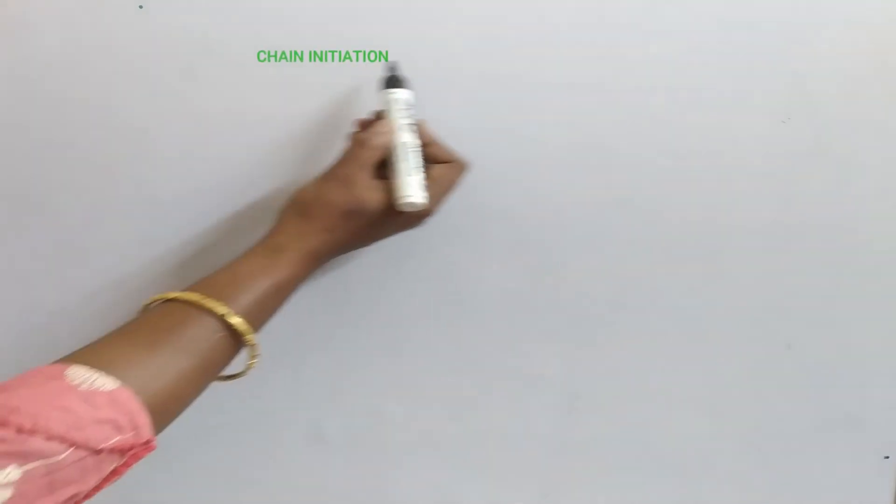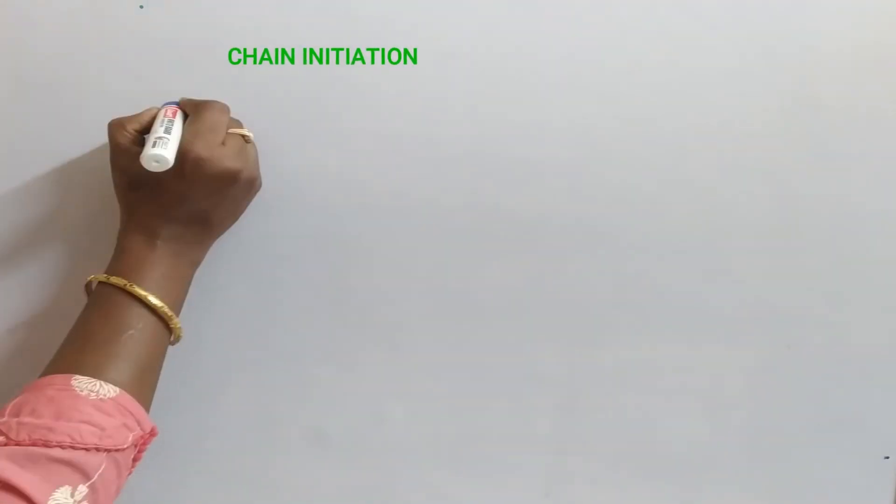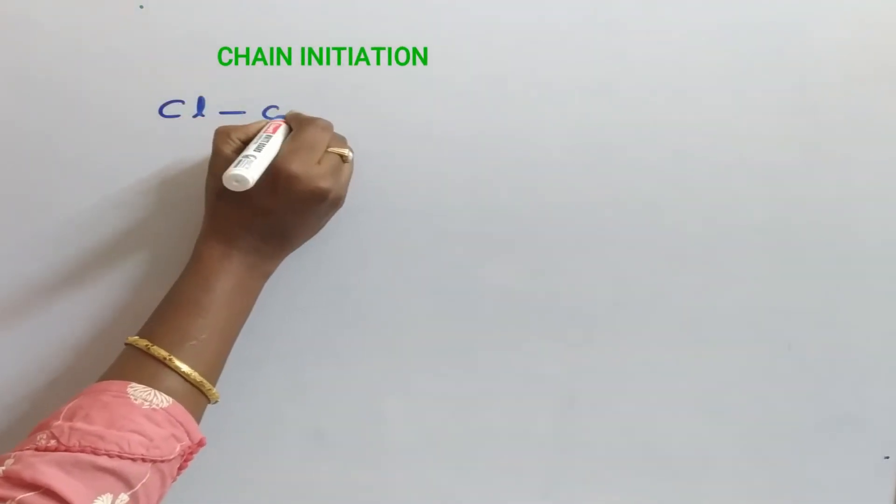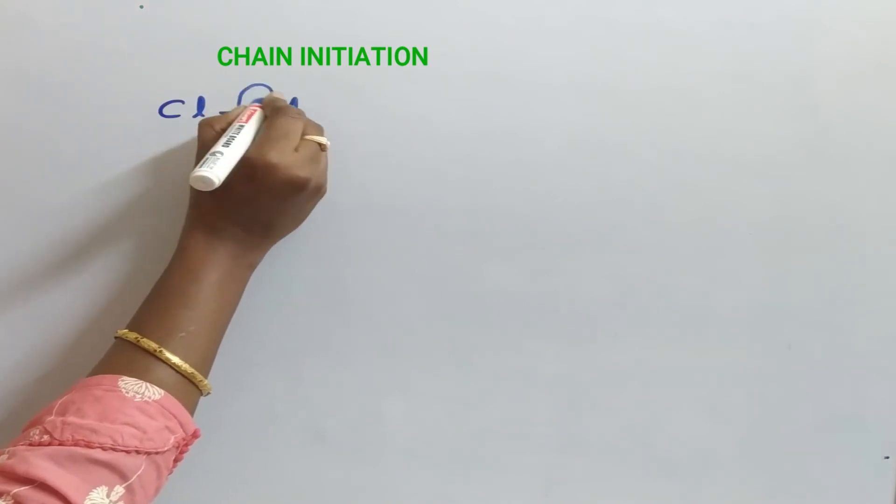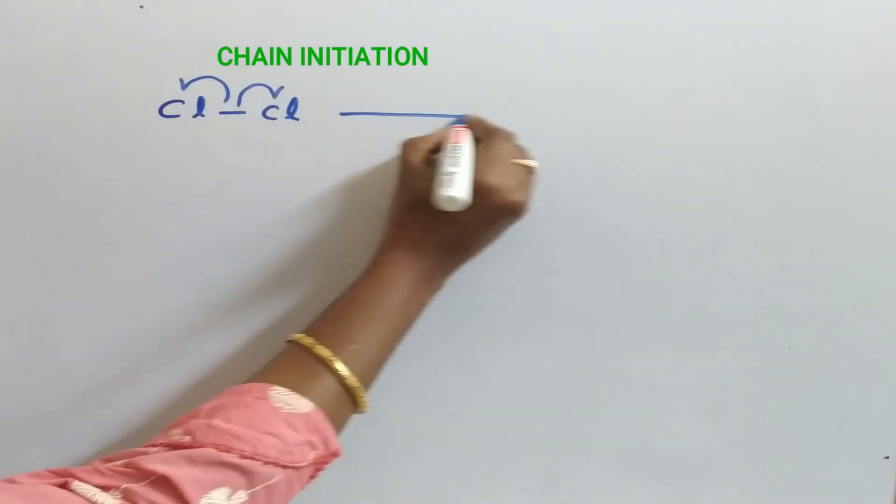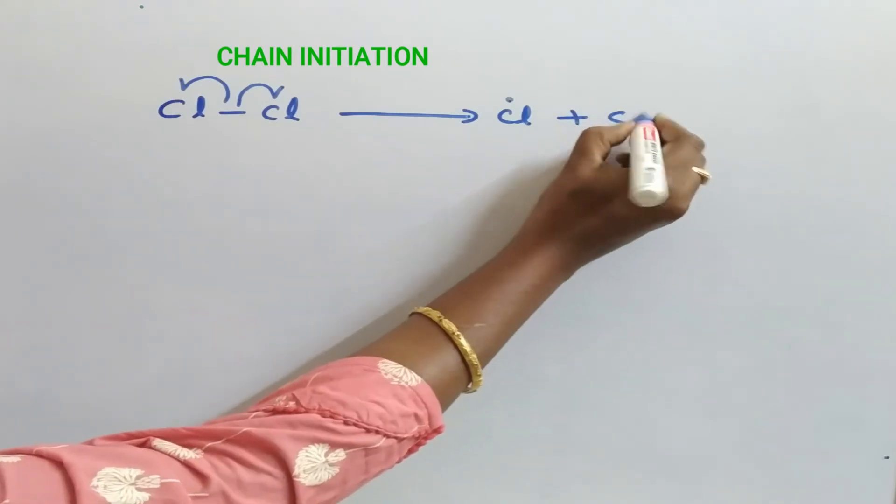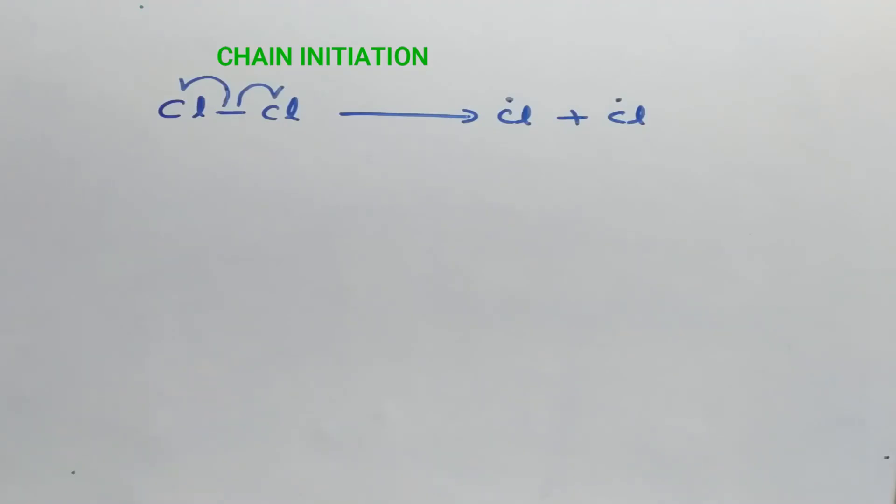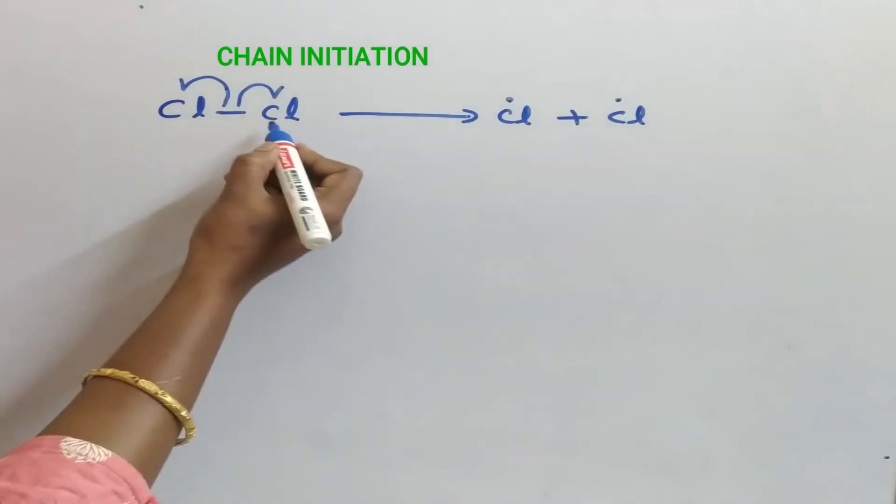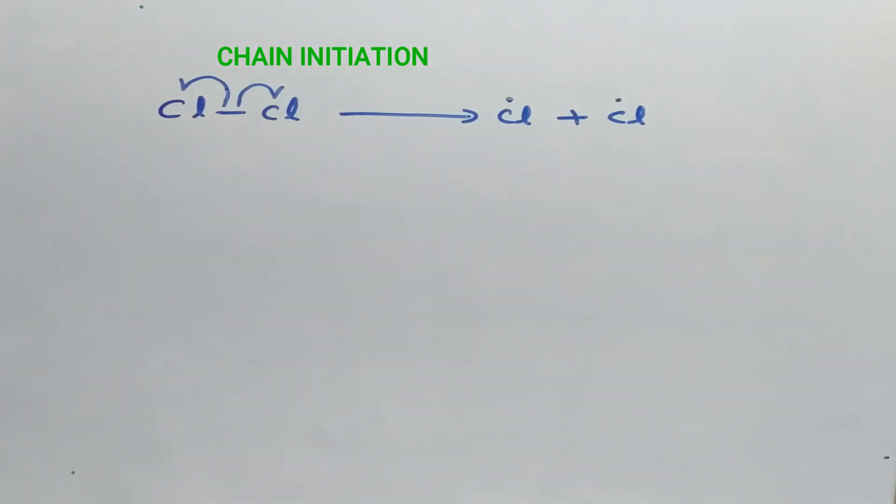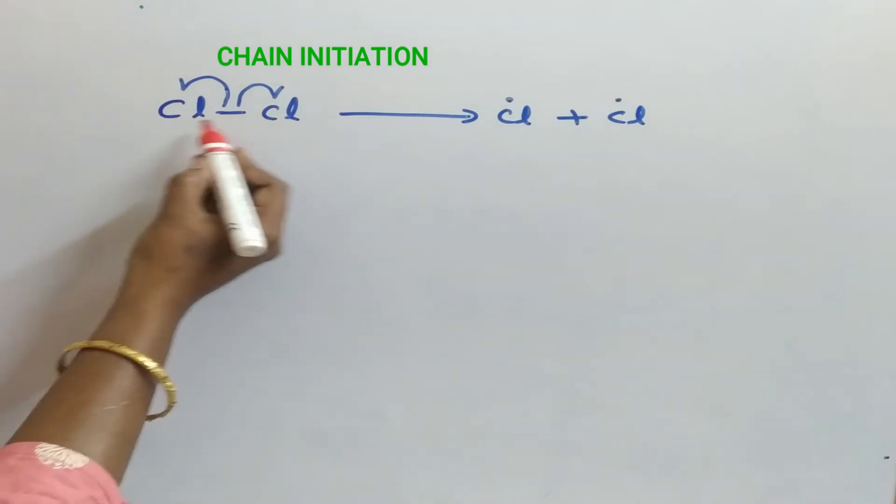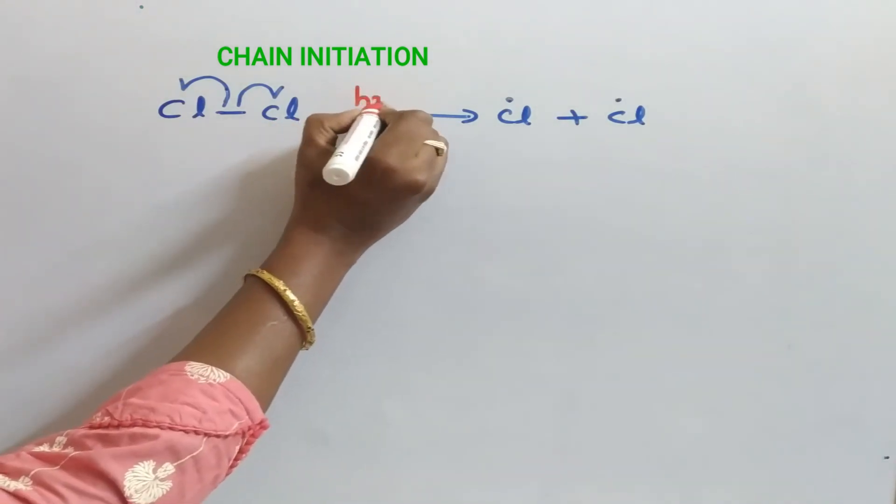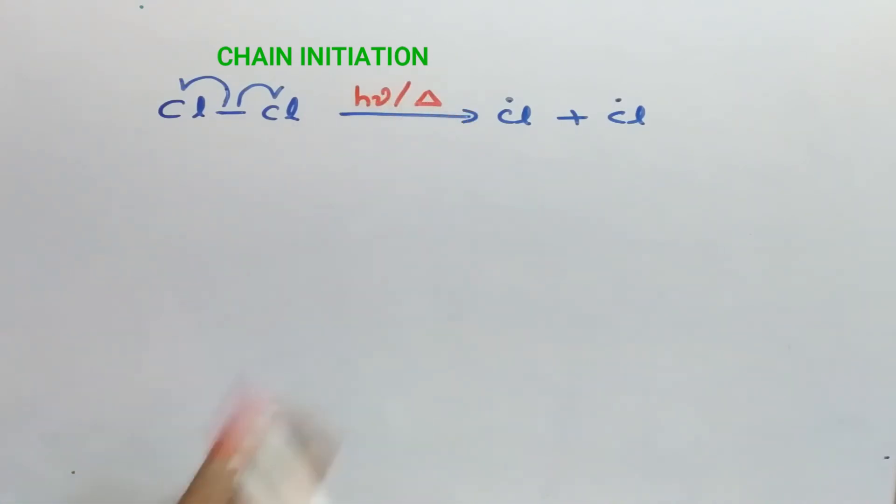What is step 1, chain initiation? Homolytic cleavage occurs in the chlorine molecule to yield chlorine free radicals. What is homolytic cleavage? Equal distribution of electrons takes place between the atoms. The energy for this cleavage is supplied by light or high temperature.